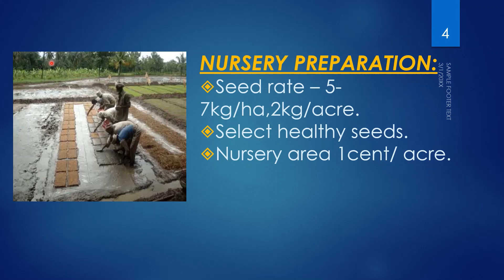For the SRI method, the seed rate is 5 to 7 kg per hectare. Per hectare refers to two-and-a-half acres. For one acre, the seed rate is 2 kg. We have to select healthy seeds. For nursery preparation, it requires 1 cent per acre — only 1 cent of field to prepare for one acre.